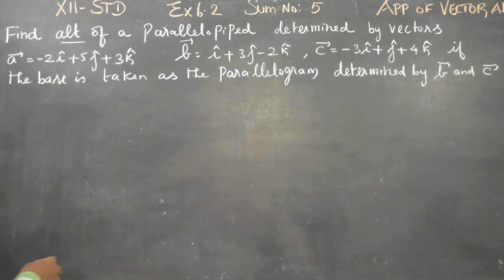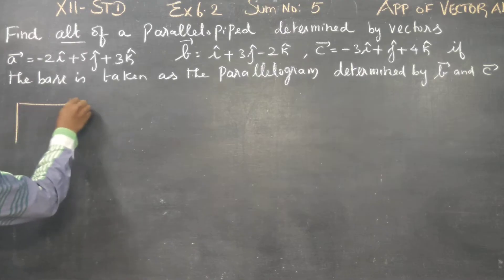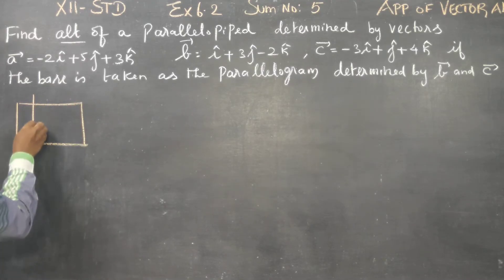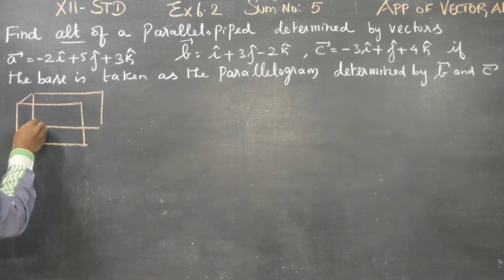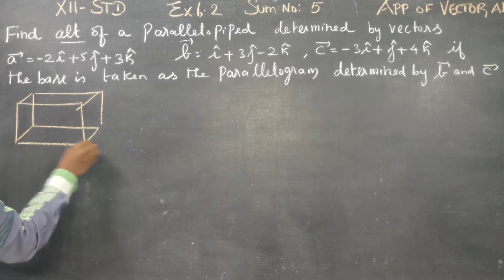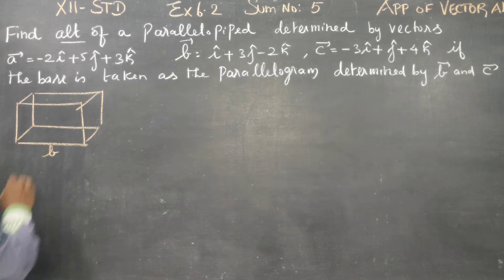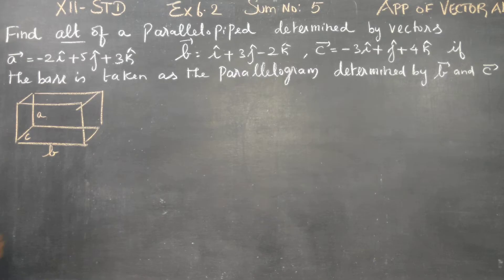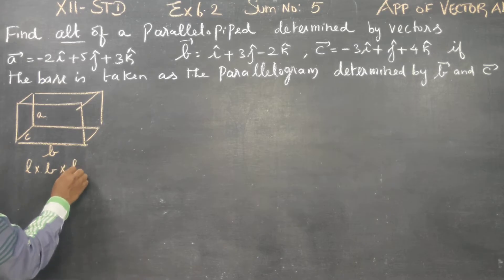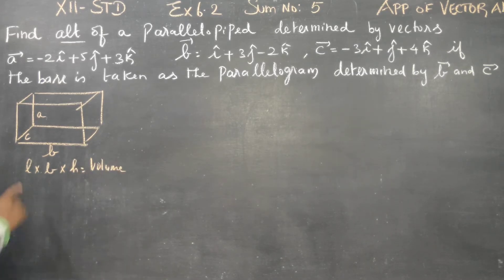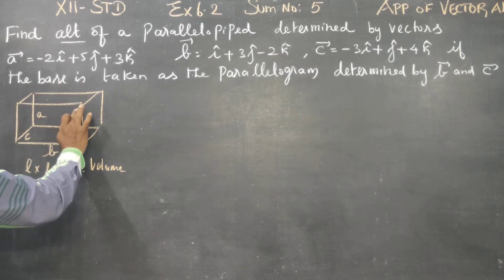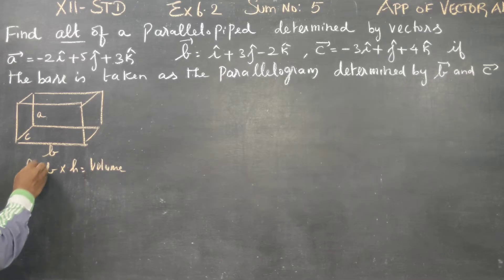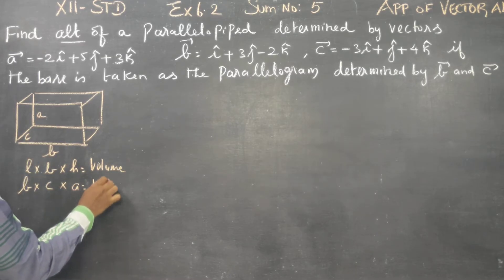Before entering into the sum, a small revision. Consider this cuboid. Let the length of the cuboid be B, let the breadth be C, and let the height be A. Therefore, length into breadth into height gives the volume of the cuboid.